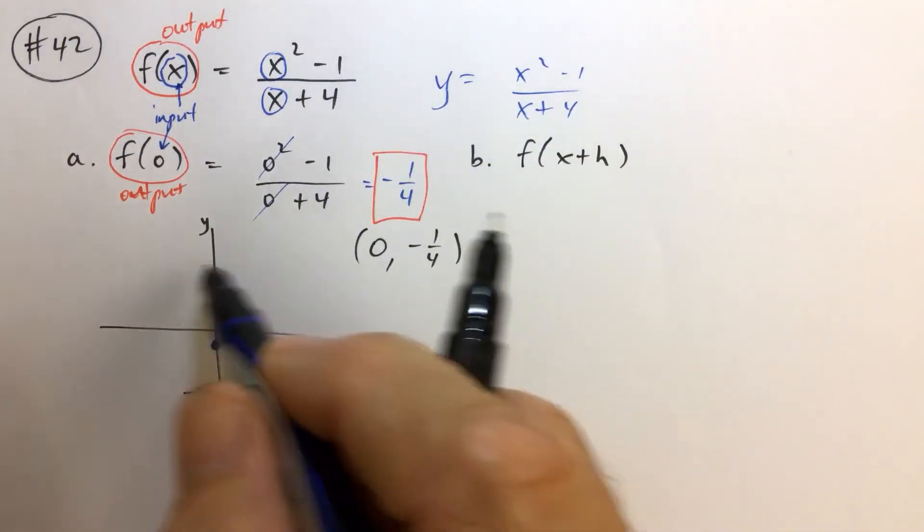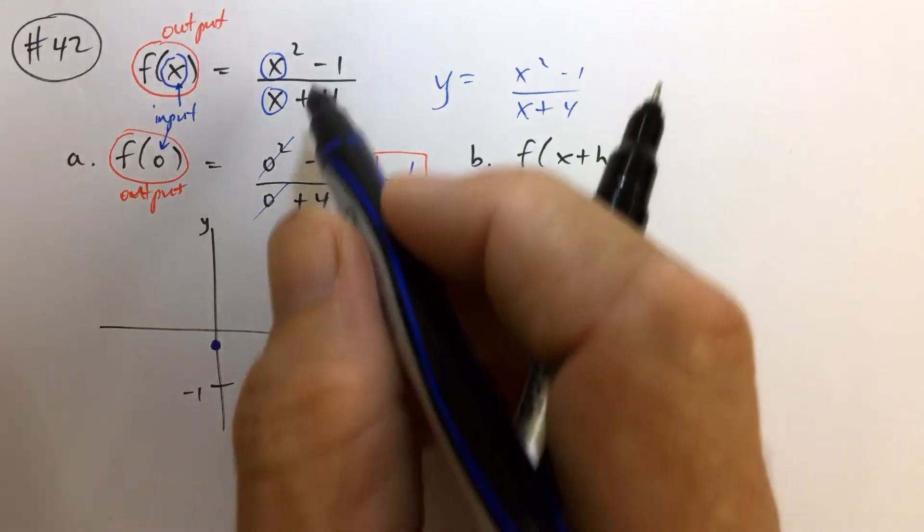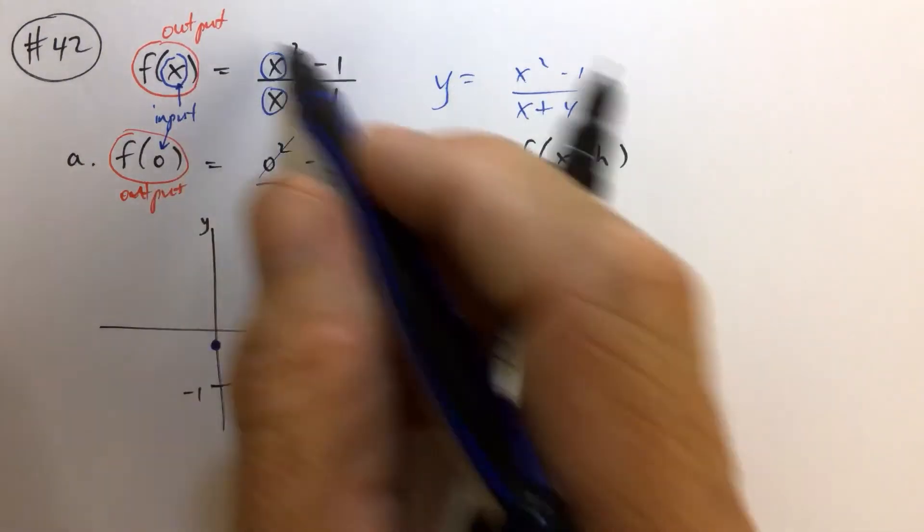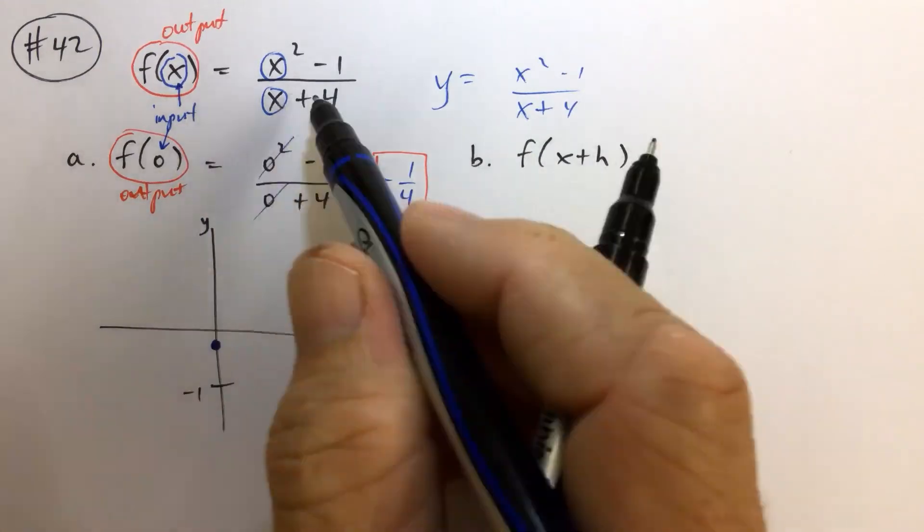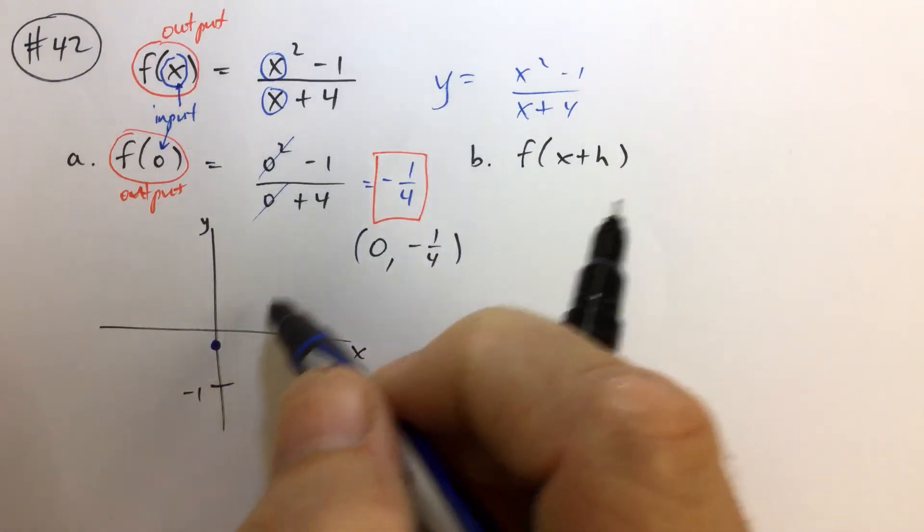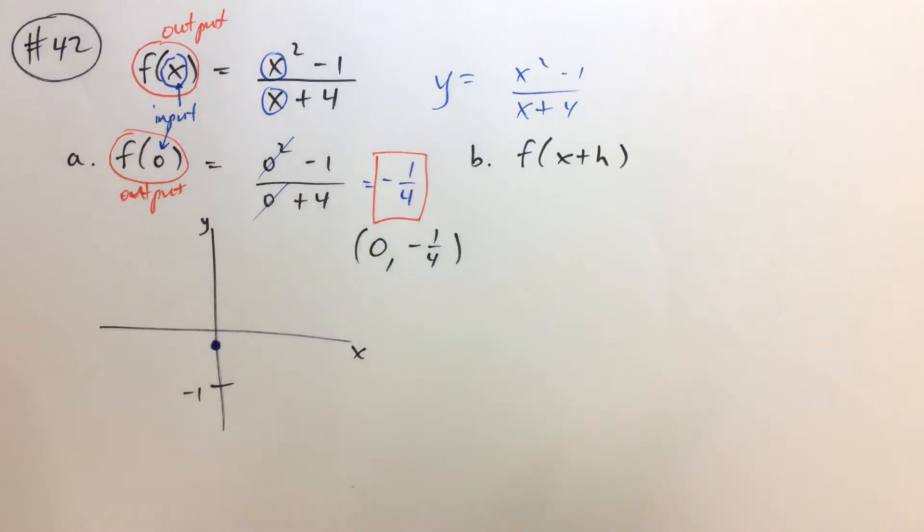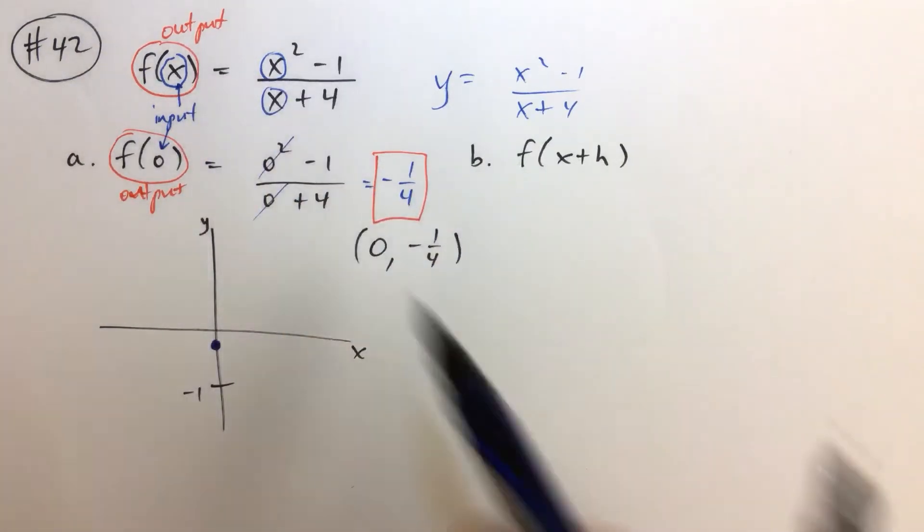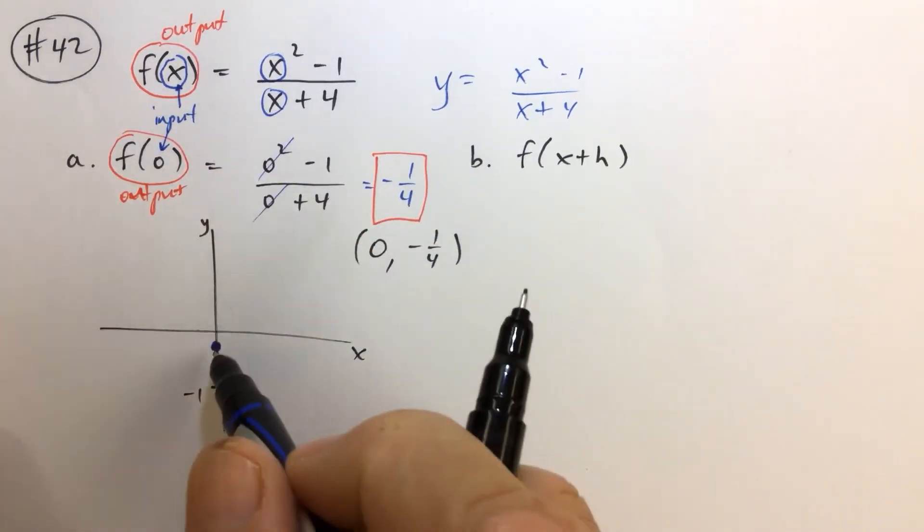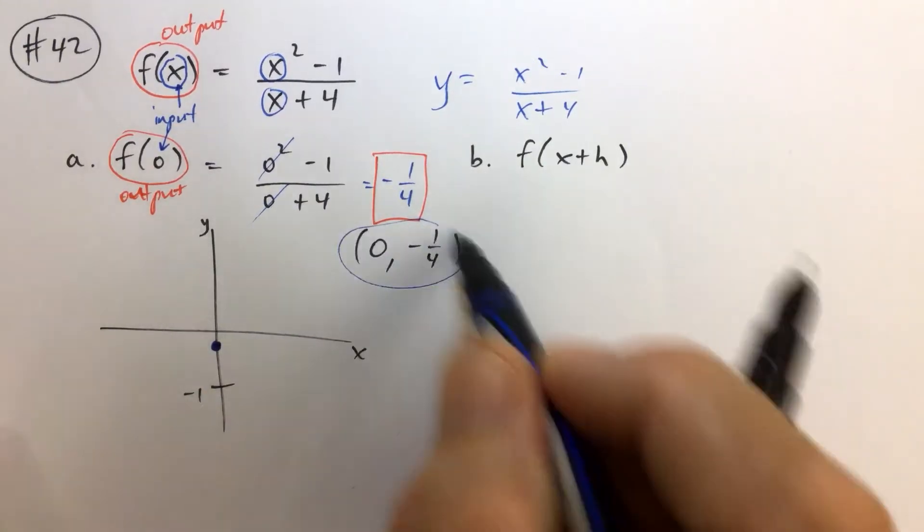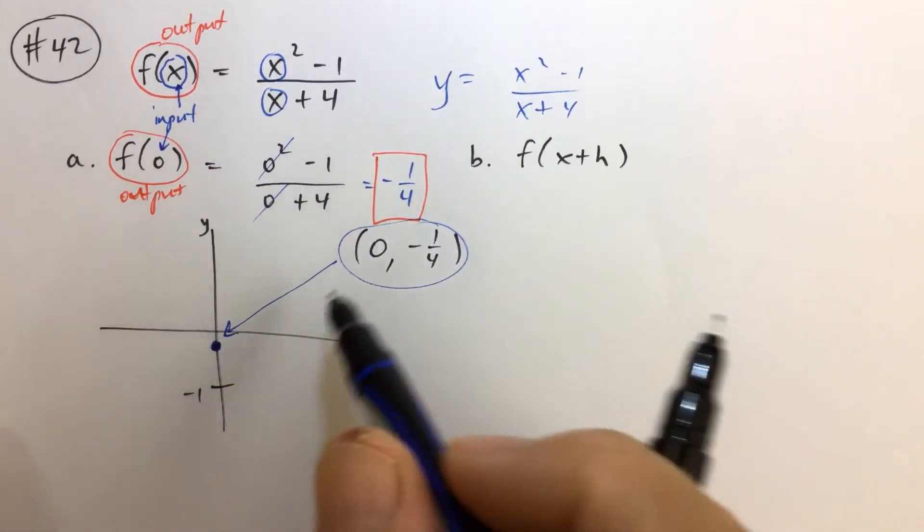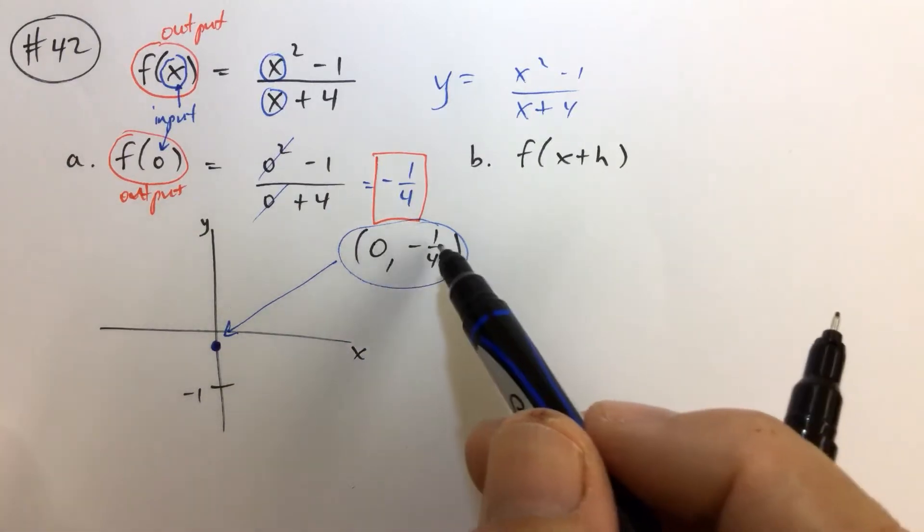So if we collect all the points and plot all the points that actually make this equation true, that all the collection of inputs and outputs, then what we'll have is the bunch of dots all over. And when we connect the dots, we have the graph of that function. We're not going to graph this right now. I'm just showing you. We have one dot, one point. It has a pair of coordinates. That pair of coordinates right there that corresponds to the input x and the output y.